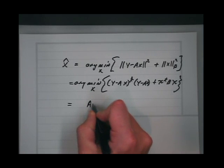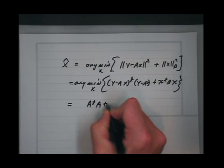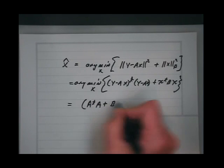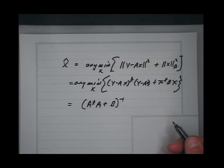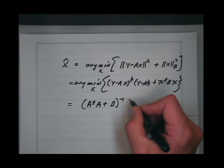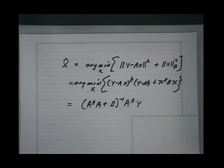The closed-form solution is: x-hat equals (A-transpose A plus B) inverse times A-transpose y.